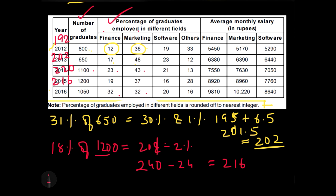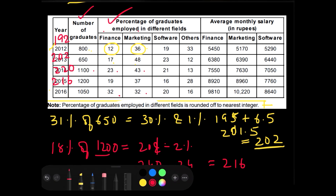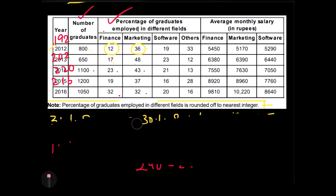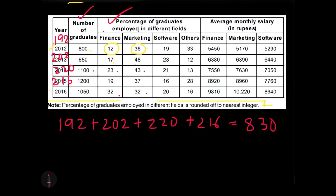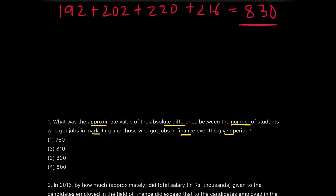The last data point for 2016 shows 32 and 32 — there is no percentage change. When there is no percentage change there is no difference, so we avoid the data of 2016 entirely. The final answer is 192 plus 202 plus 220 plus 216. Adding all these numbers gives 830. Looking at the options, 830 is present in option number 3. So the answer for this question is 830.